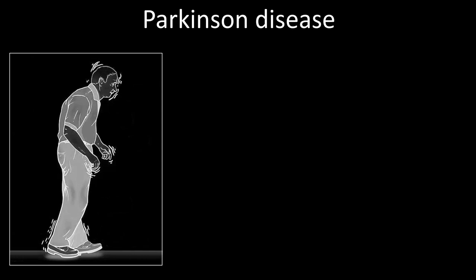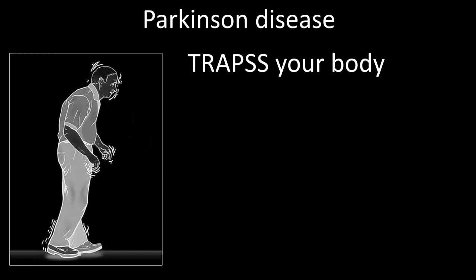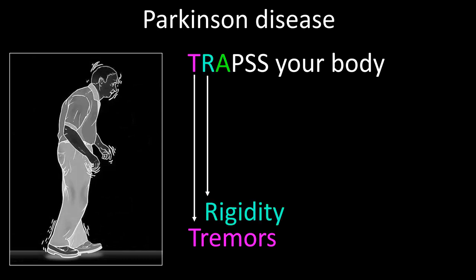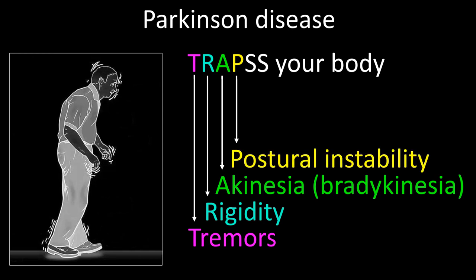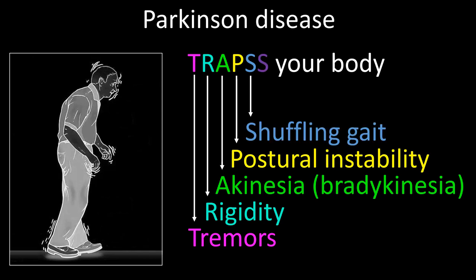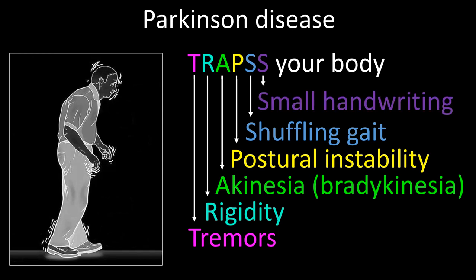The motor manifestations of Parkinson's disease can be easily memorized by remembering that Parkinson's disease 'TRAPS' your body. T stands for tremor, R for rigidity, A for akinesia or bradykinesia, P for postural instability, the first S for shuffling gait, and the second S for small handwriting.